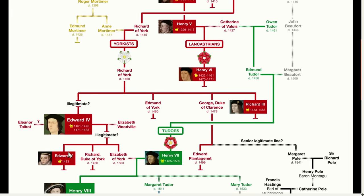His son Edward V was only 12 at the time, so basically his Uncle Richard was left in charge. And before the young boy was crowned, Uncle Richard dropped a bombshell. He claimed that Edward IV had had a secret first marriage and that therefore Edward V and his siblings were all illegitimate, since their parents' marriage was illegal. Suddenly, young Edward and his brother Richard went missing, never to be seen again, and Richard III was named King.